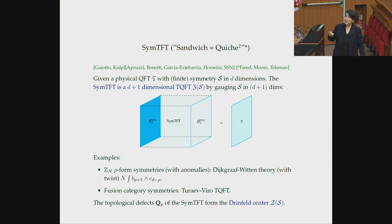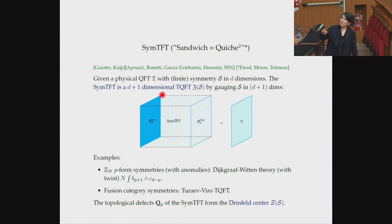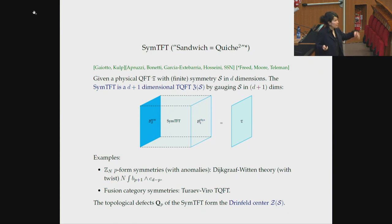This is called the sandwich construction. You have two boundaries of the SymTFT, and those determine what the theory and its symmetries are in D dimensions. Examples of the SymTFT: for a p-form symmetry, an abelian one, it's just a BF theory — a Dijkgraaf-Witten theory for, say, a Z_n p-form symmetry, with background fields. In two dimensions, the three-dimensional TQFTs are the Turaev-Viro theories.